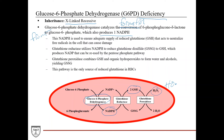Glutathione reductase takes the NADPH yielded by glucose 6-phosphate dehydrogenase and uses it to reduce glutathione disulfide (GSSG) to give reduced glutathione (GSH), regenerating NAD+ which can be reused by the pentose phosphate pathway. Glutathione peroxidase then combines reduced glutathione with organic hydroperoxides to form water and alcohols, neutralizing these damaging chemicals. This pathway is the only source of reduced glutathione in red blood cells.